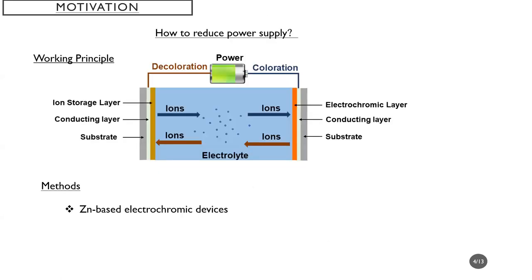However, the operation of conventional electrochromic devices requires applied voltages in both coloration and decoloration processes. This is not an energy-efficient technology. So how do we reduce the power supply? We introduce zinc anode-based electrochromic devices.